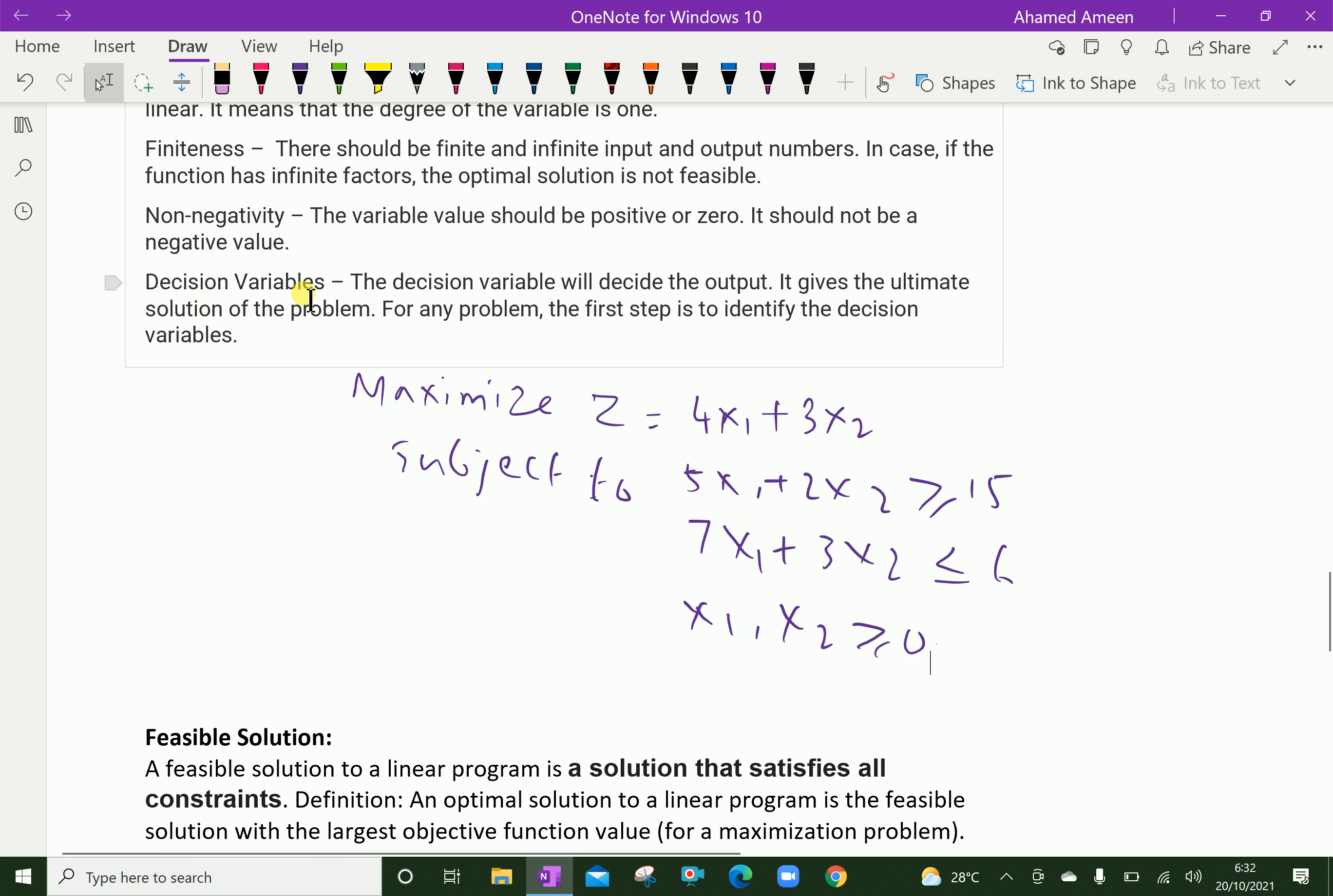Decision variables. The decision variable will decide the output. It gives the ultimate solution of the problem. For any problem, the first step is to identify the decision variables. You have to consider the decision variable first to make it linear programming.